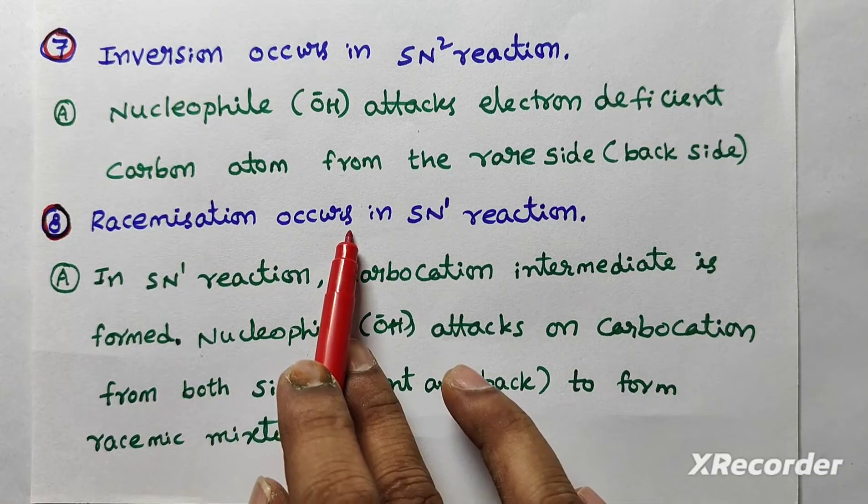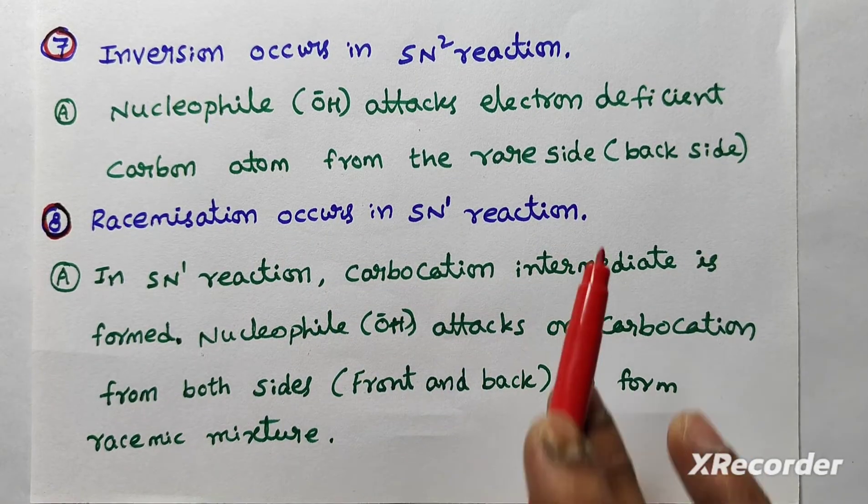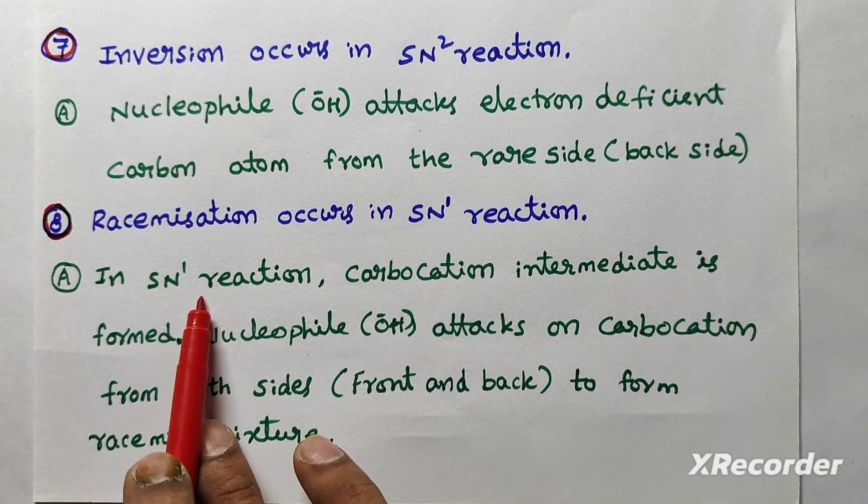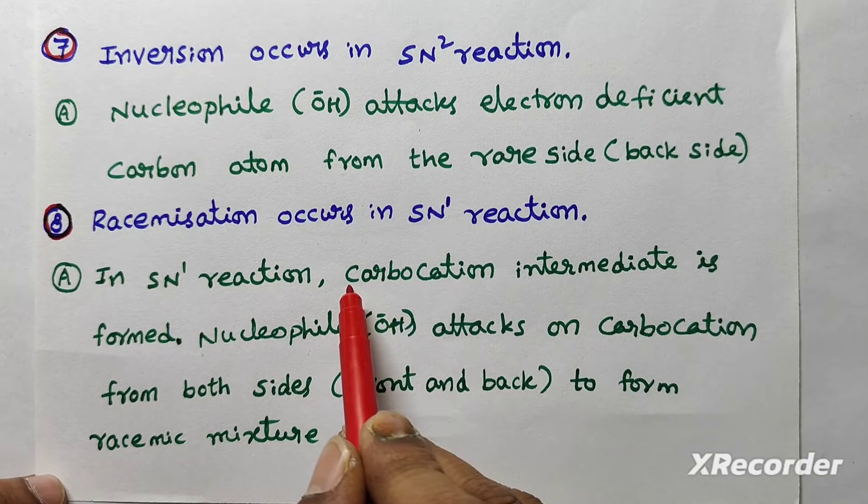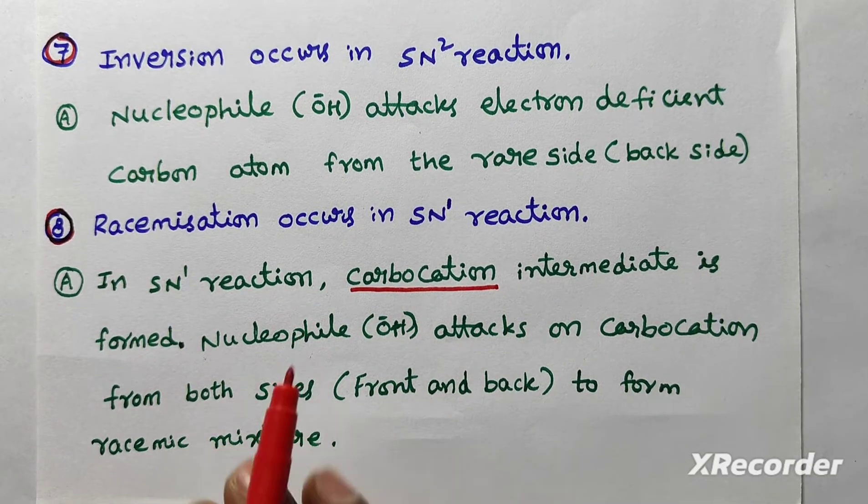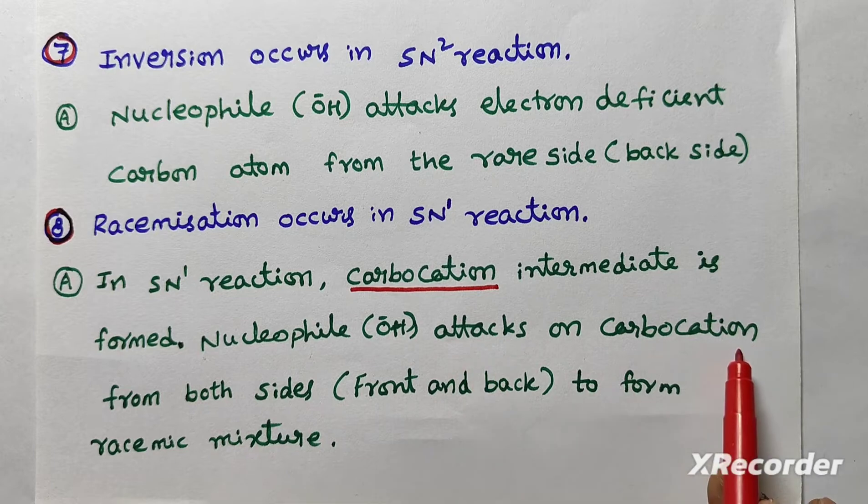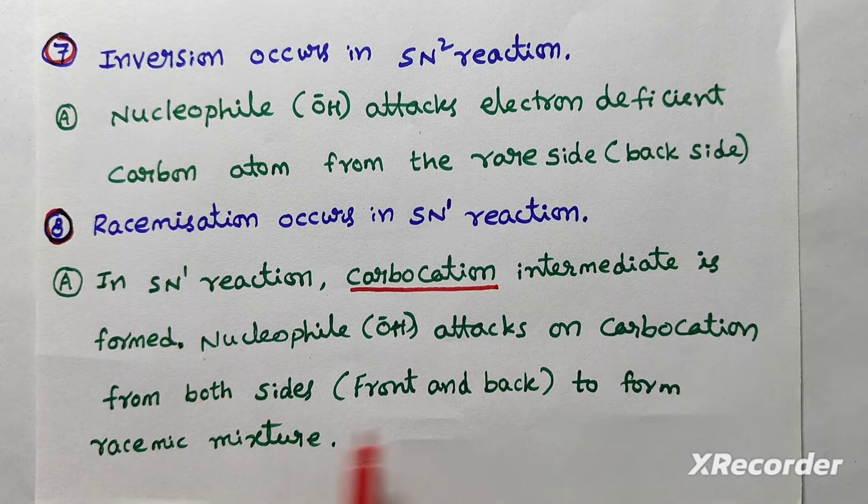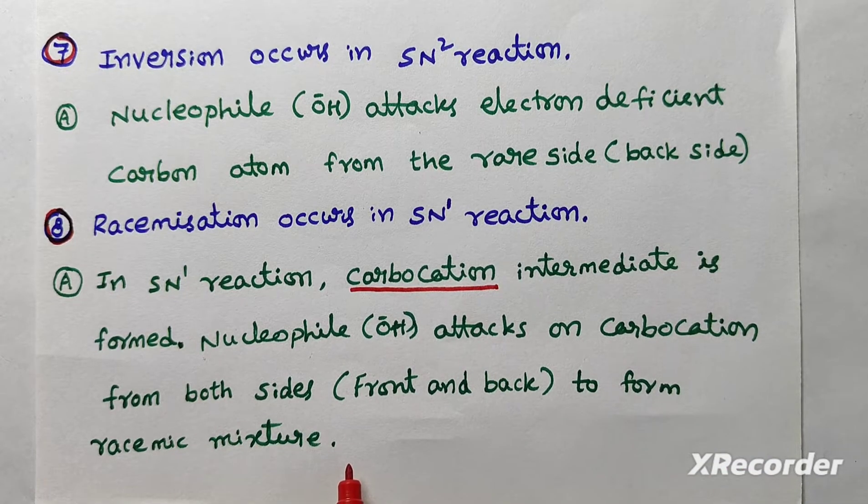Next, racemization occurs in SN1 reaction. Give reason. In SN1 reaction, first remember, carbocation is intermediate. Nucleophile attacks on carbocation from both sides to form racemic mixture. 50% dextro, 50% levo. Look at this.